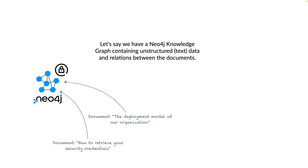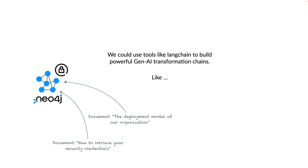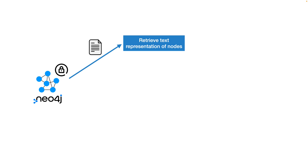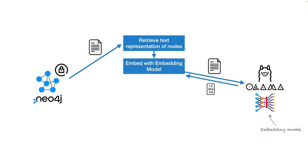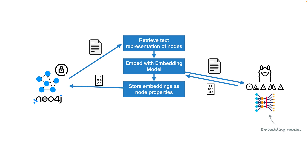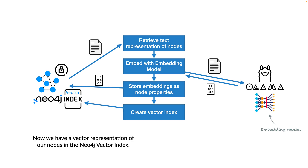Let's say we have a Neo4j knowledge graph containing unstructured data — for example, text and relationships between documents. We could use tools like LangChain to build powerful GenAI transformation chains: retrieve the text representation of nodes, embed the text documents using an embedding model to retrieve vectors, and finally store the embeddings as node properties in our graph. We can then create a vector index to allow for similarity vector search in our graph database.